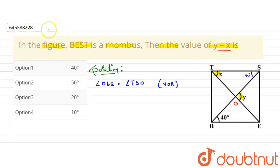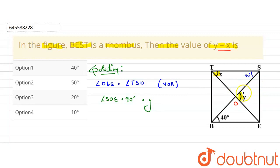Now, angle SOE will be 90 degrees, which equals y. This angle is 90 degrees because we know that the diagonals of a rhombus bisect each other at 90 degrees. So this is 90 degrees, meaning y equals 90 degrees.